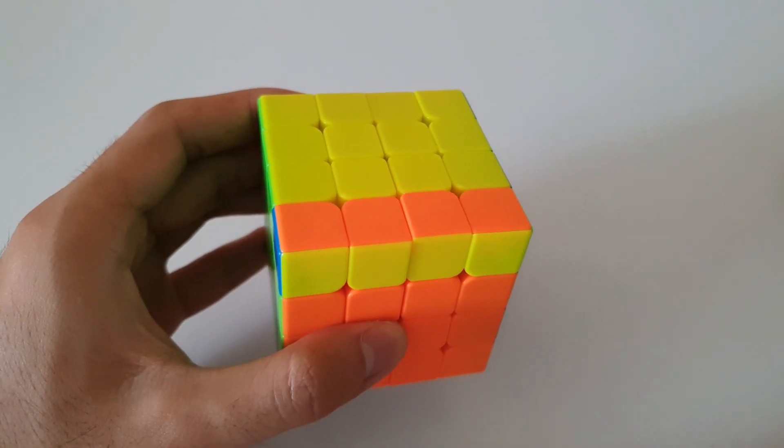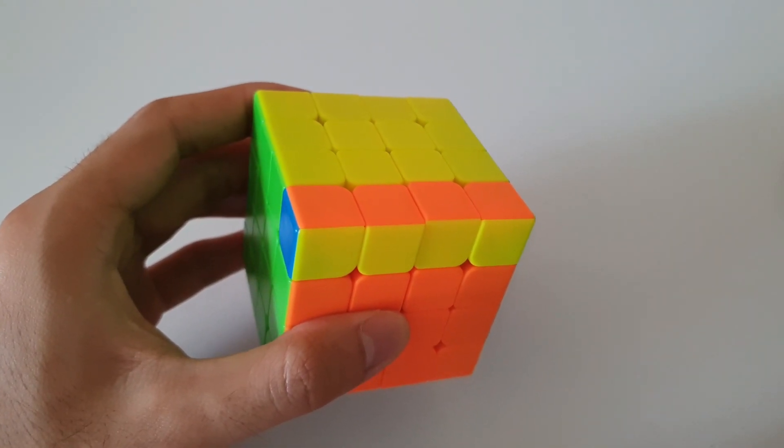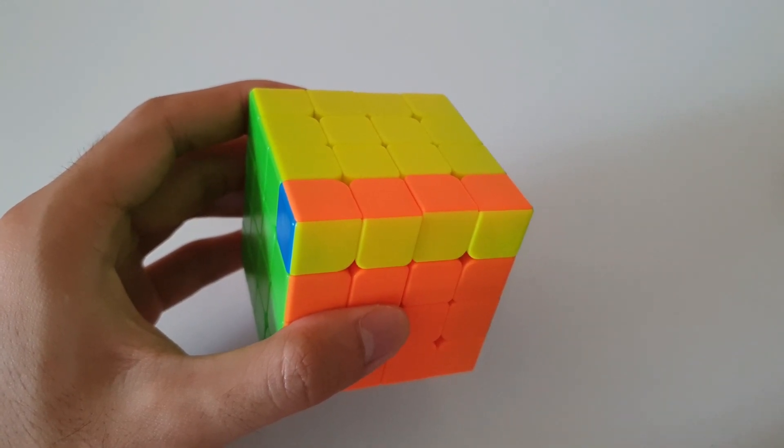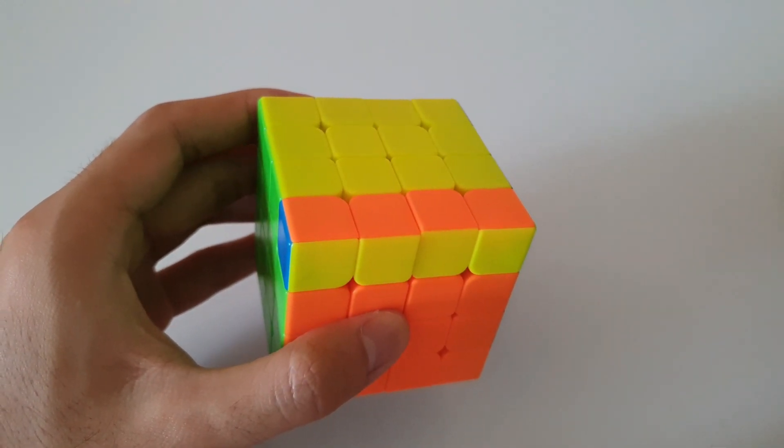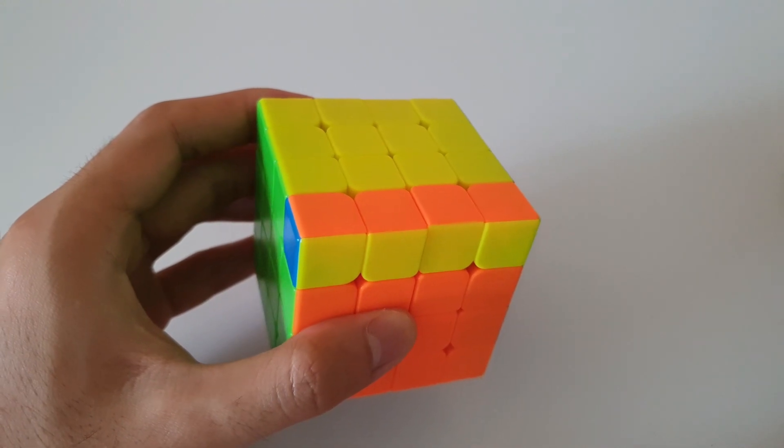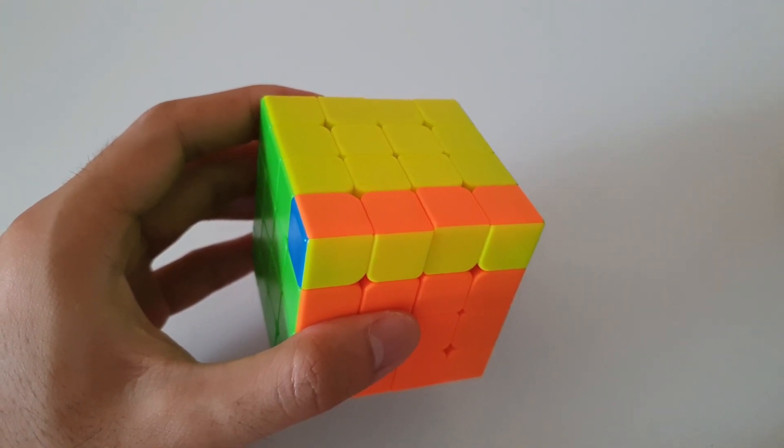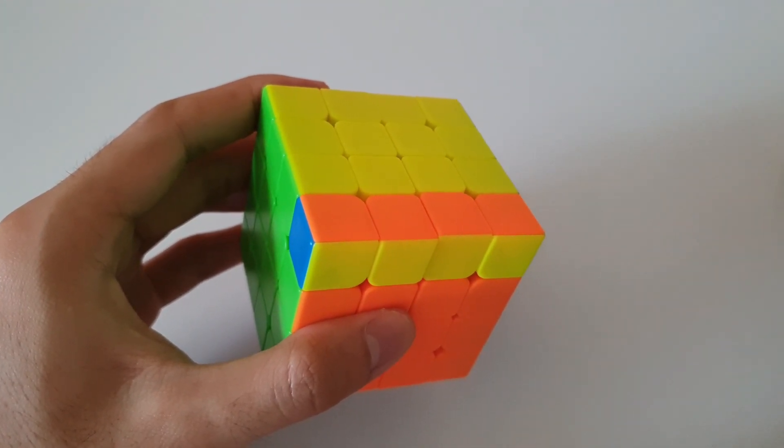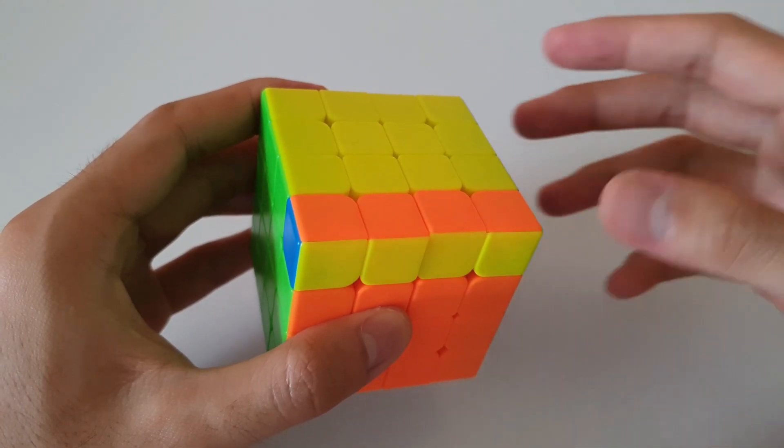So there's two different types of parities that you can get on a 4x4. The first one is OLL parity, which is the one I'm going to show here. Later on I'll show PLL parity as well. So both of these parities means that you can get OLLs and PLLs that you can't get on a 3x3.